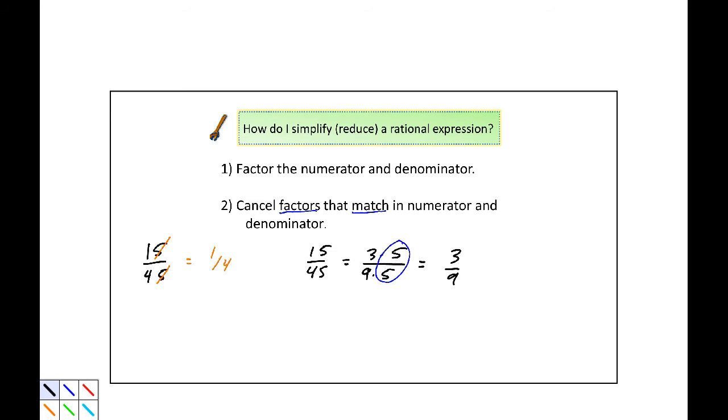Well, I can do one better and write this as 1 times 3, that's what 3 is, that's our numerator, and our denominator is 3 times 3. 3 divided by 3 is 1, so that this results in 1/3. So I have to get common factors before I can reduce.